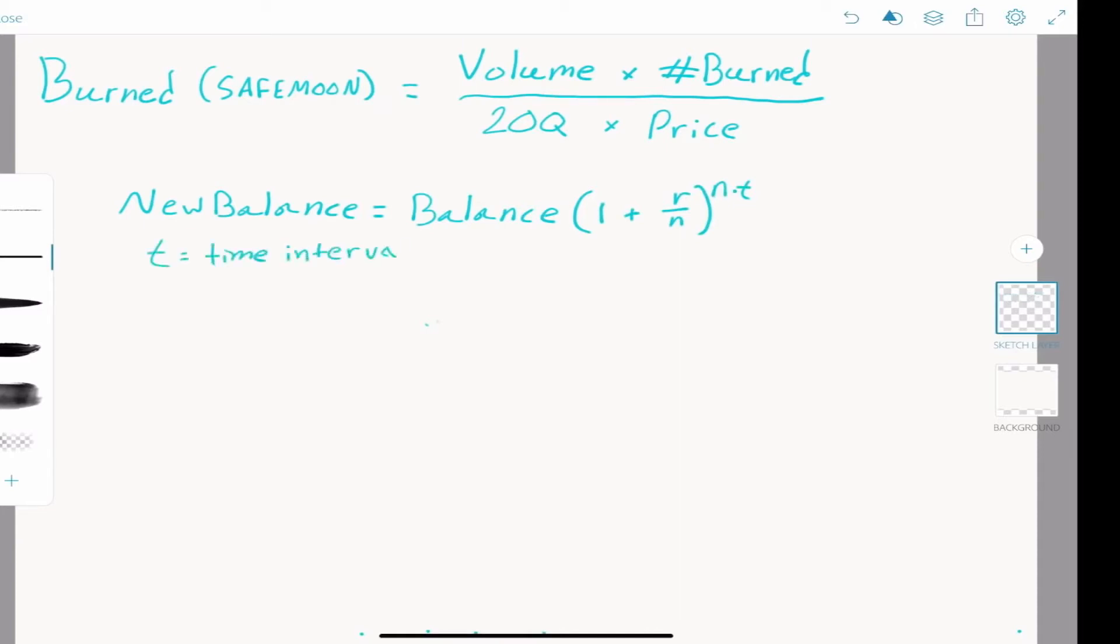N is the number of times your amount compounds per unit t, and we're evaluating t in days. So n would be the number of transactions that occur per day, but we're using 24-hour volume in our equation, so n becomes 1. Our equation for compounding burn then becomes: new burn equals current burn times 1 plus rate raised to the t.